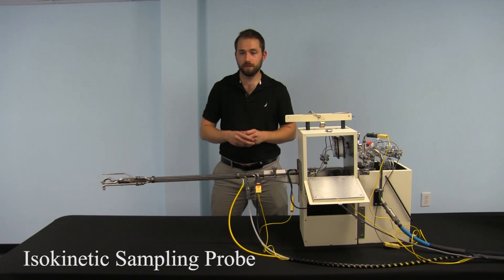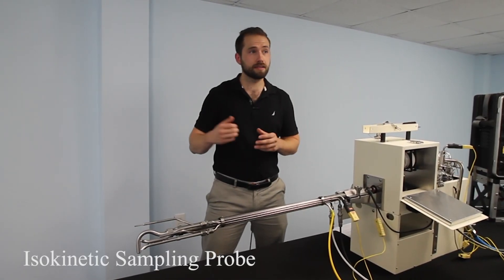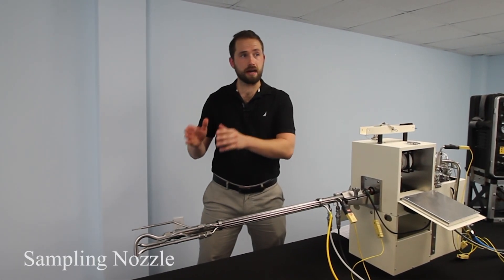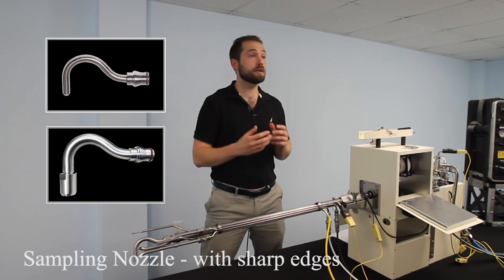First, we have the probe. The probe is the part of the sampling train that's going to be in the stack collecting the sample. We use a nozzle to collect the sample that has sharp edges that don't disturb the particles around it.